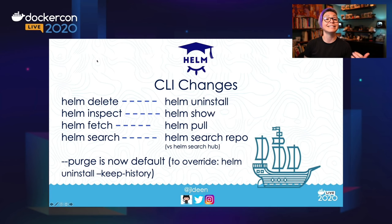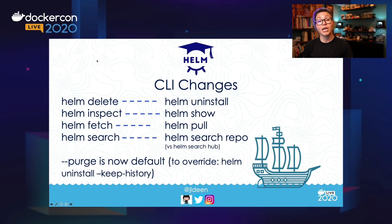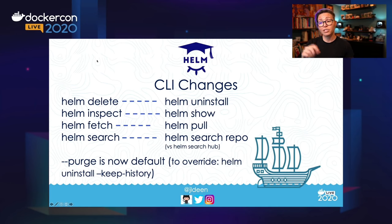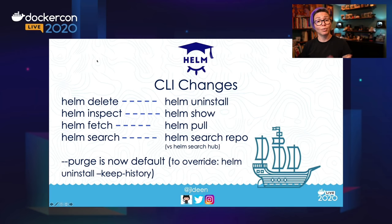Previously, if I wanted to delete a release, I could do `helm delete` and the name of the release, but that would keep the history on the server. If I wanted to delete the history, I would have to do `--purge`. Now that behavior with `--purge` is the default. So `helm delete` has become `helm uninstall` and `--purge` is no more. If I wanted to keep the history, I could use `--keep-history`. `helm inspect` has become `helm show`, `helm fetch` has become `helm pull`, and `helm search` has become `helm search repo` as opposed to `helm search hub` — really trying to make it more native and intuitive.